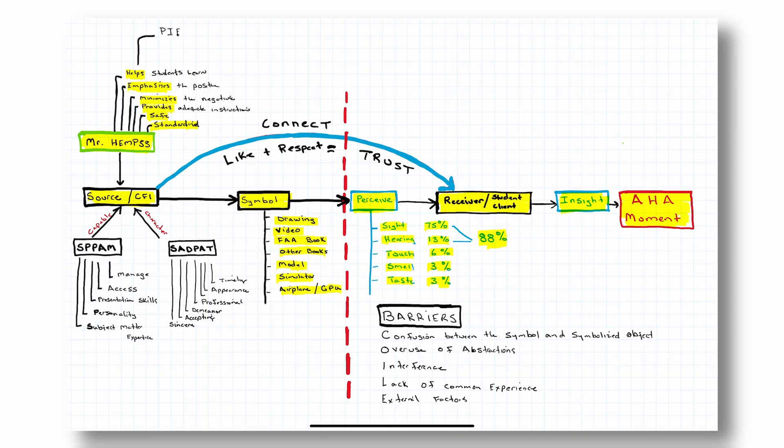So Mr. HEMP's is that person that helps students learn, emphasizes the positive, minimizes the negative, and provides the training in a safe and standardized environment. What we want to make sure we do as well is there's two things that's FAA acronyms or mnemonic memory aids that I think really help us out. One of them is SPAM, and I use the SPAM with two Ts. It helps me. SPAM is all about our capability as an instructor. To be capable, we have to have the SPAM. We have to have subject matter expertise. If we don't know, if we don't know the subject matter, we're not ready to teach it. So we have to have subject matter expertise and we have to be able to present it to people in a good presentation.